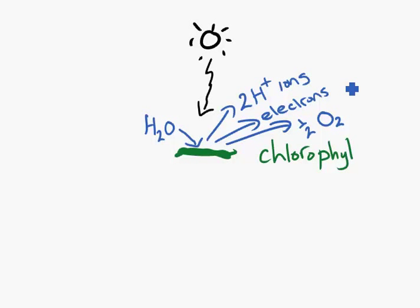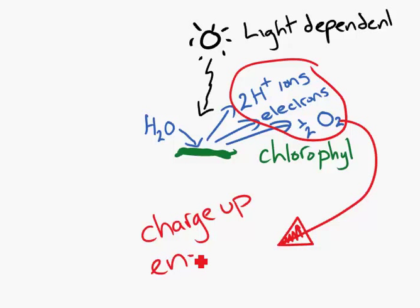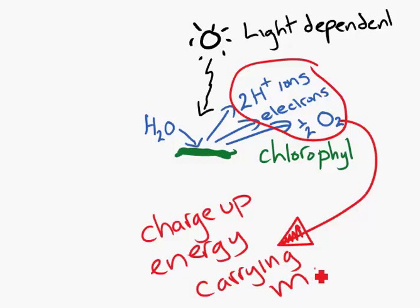So the first part of photosynthesis needs light—we have the sun, so it's called light-dependent. These bits are used through lots of chemical reactions to charge up energy-carrying molecules. That's it.